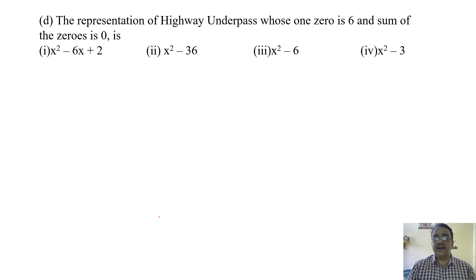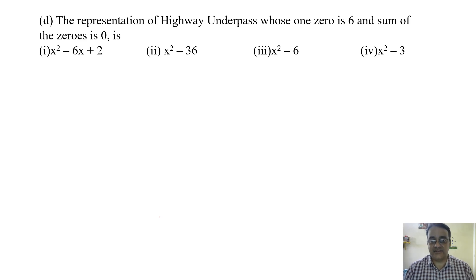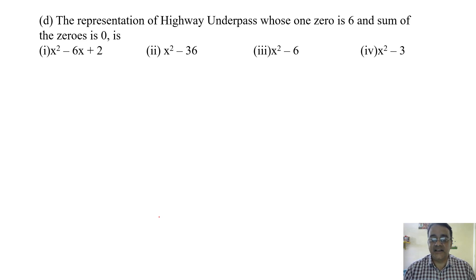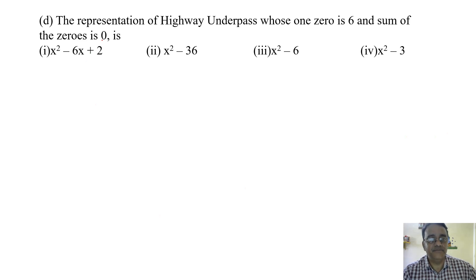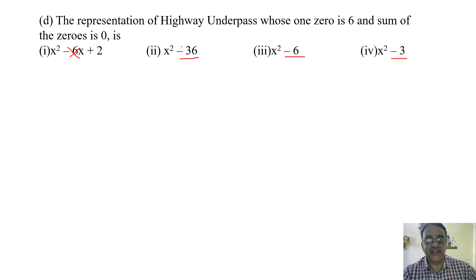The representation of a highway underpass with one zero equal to six and sum of zeros equal to zero. Using the formula x squared minus sum of zeros into x plus product: sum is zero, so we check the products. One zero is 6 and sum is zero, so the other zero is minus 6.